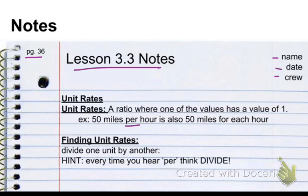Anytime we do per, we're basically saying this many for every one of these. Every time we say one of these, it's basically a ratio. So, finding unit rates is easy. You divide one unit by another unit. And the hint I'm going to give you is, every time you hear per, think divide.